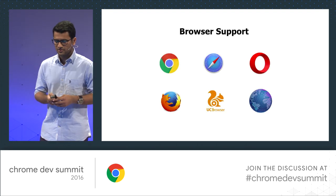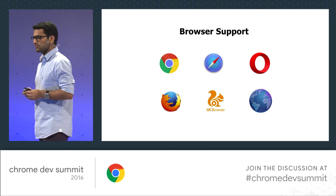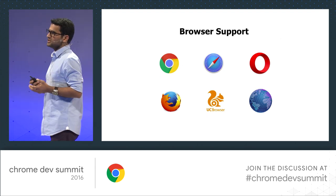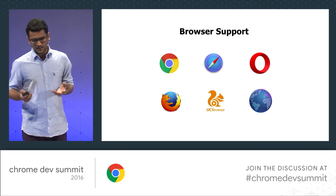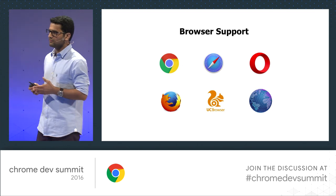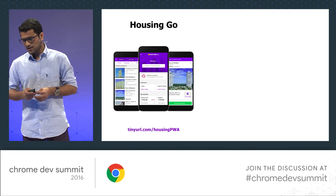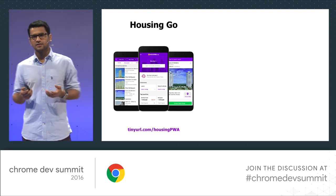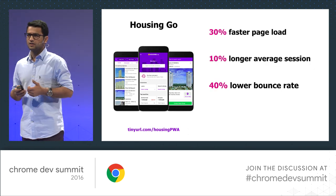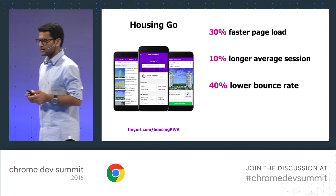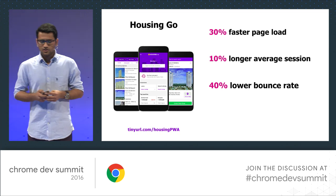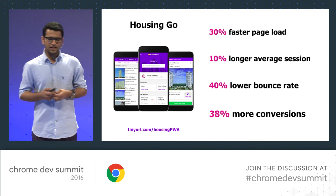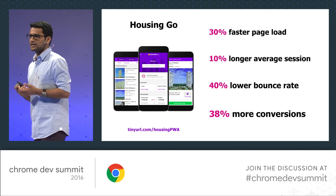We started off building our mobile website. The first aim was to support all the major browsers across more than 2,000 different devices that our users have. Once that was done, we'd upgrade the experience to compete with our native apps. So we built Housing Go, and we were happy with the metrics. We brought down page load times by 30%, had 10% longer user sessions, cut bounce rate by 40%, and most importantly, saw 38% more conversions on our mobile website.